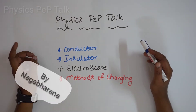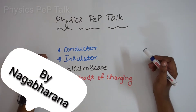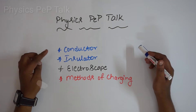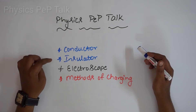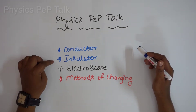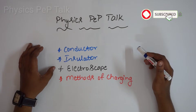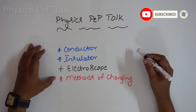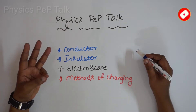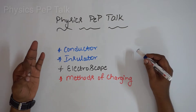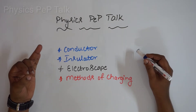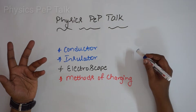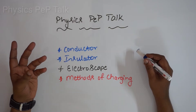Hello guys, welcome to Physics Pep Talk. In this video you will see what are conductors, what are insulators, construction and working of electroscope, and methods of charging. There are 3 types of charging: charging by friction, charging by conduction, and charging by induction. Let's start the intro.